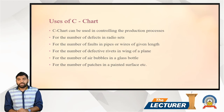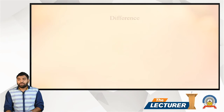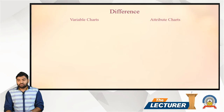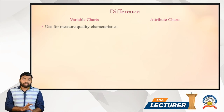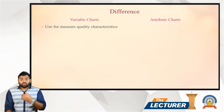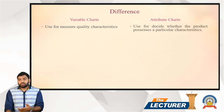Now let's see some points of difference between variable chart and attribute chart. Variable chart is used for measurable quality characteristics. Attribute chart is used to determine whether a product possesses a particular characteristic or not.